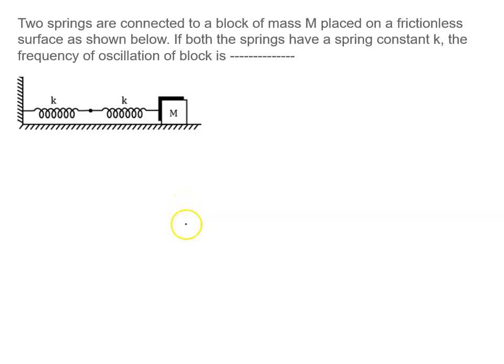Two springs are connected to a block of mass M placed on a frictionless surface as shown below. If both the springs have a spring constant k, not k1, spring constant k and k, the frequency of oscillation, let's see.